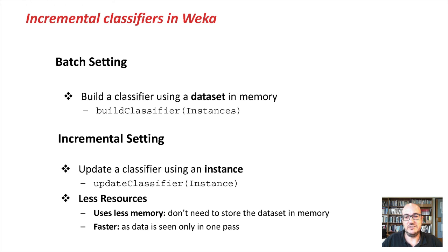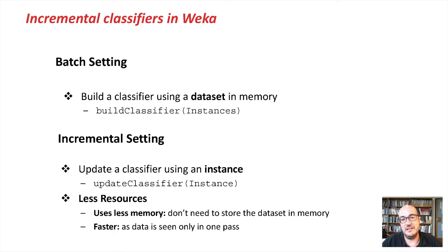In this lesson we have seen the two settings of Weka: the batch setting and the incremental setting. In the batch setting, we store all the data set in memory. In the incremental setting, we build the classifier one instance at a time. The nice thing about the incremental setting is that we can be much more efficient — we use less memory and are much faster. See you in the next lesson.